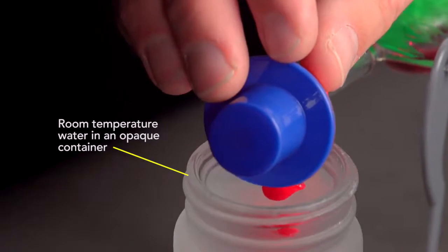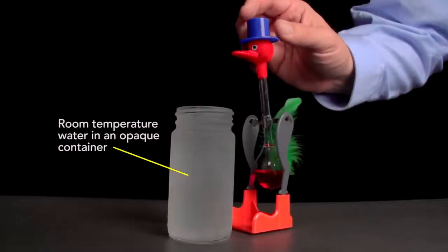Wet the bird's beak thoroughly with room temperature water. The opaque container makes it look chilled, but it isn't. Then stand it upright.